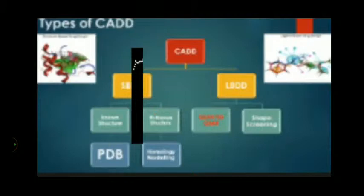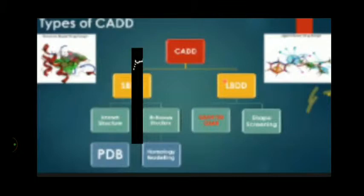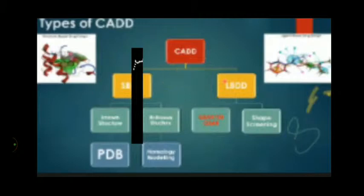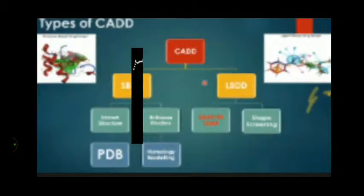The next type is LBDD — Ligand-Based Drug Design. In LBDD there are two types of approaches: one is QSAR-based, and another is shape-screening based. Shape screening can also be called pharmacophore mapping or pharmacophore studies. Let's look at QSAR first.